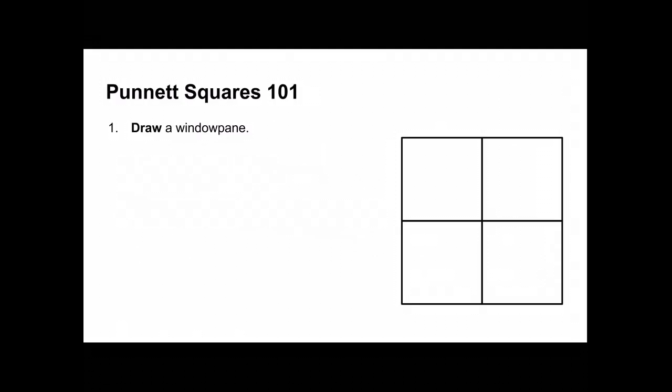So let's do some Punnett squares together. The first thing you're gonna do is draw a window pane that has a little room on the top and a little room on the left. You're gonna write the mother's alleles on the top of the box. One on top of this column and one on top of that column.